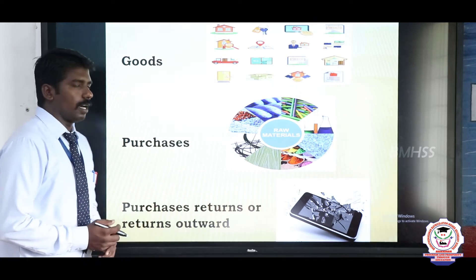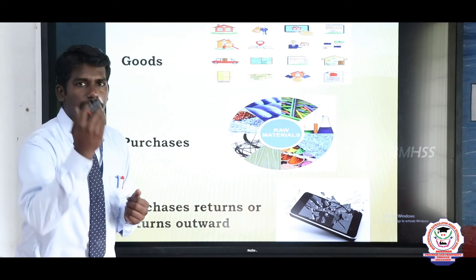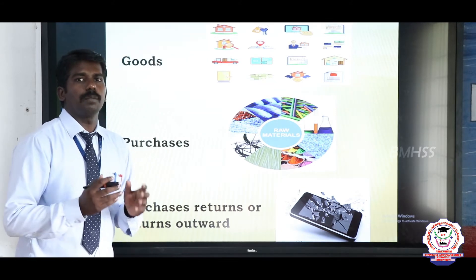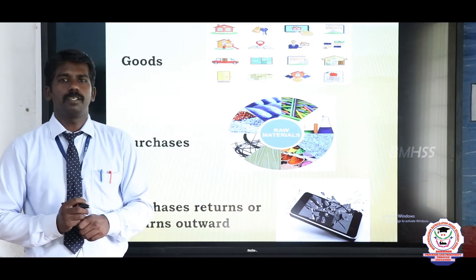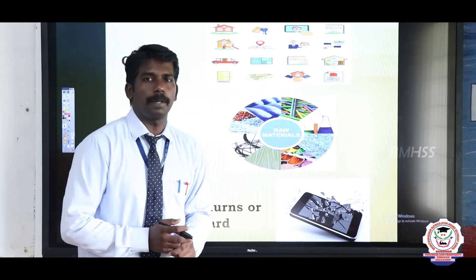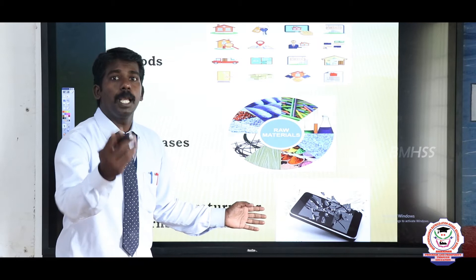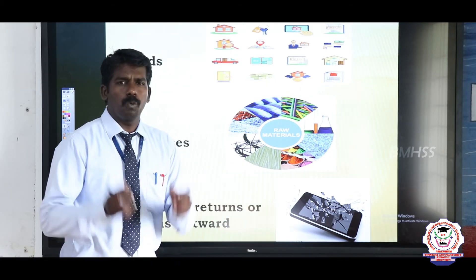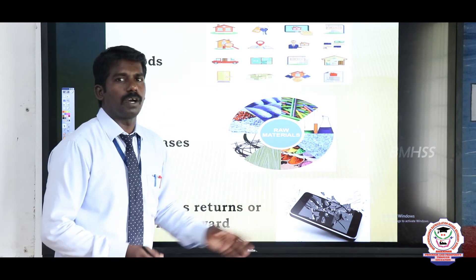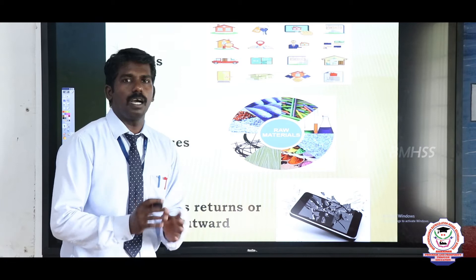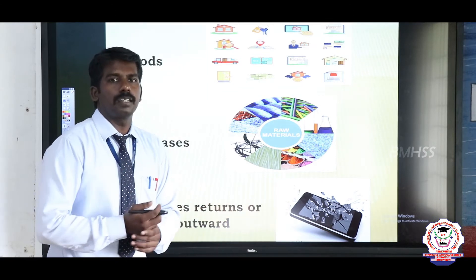Next, purchase return or return outwards. Purchase return means when the company purchases raw material from another person or company and it is not satisfactory in some way, it is returned to the supplier. When the goods are damaged, the company will not accept them because it paid for those goods. That is why the company returns goods to the supplier when goods are damaged, mismatched, or unnecessary goods are supplied.